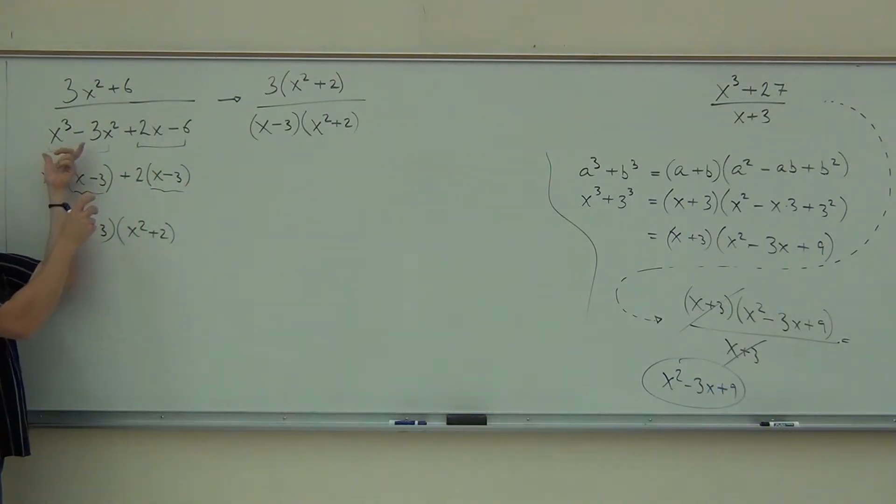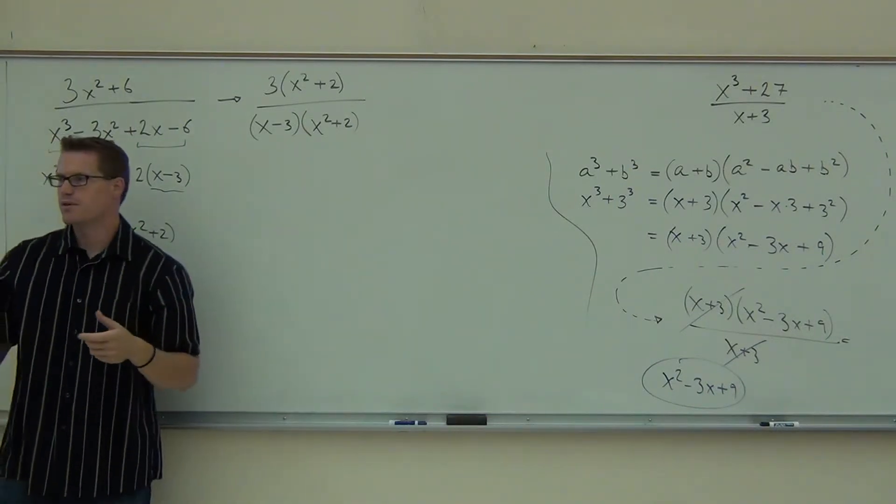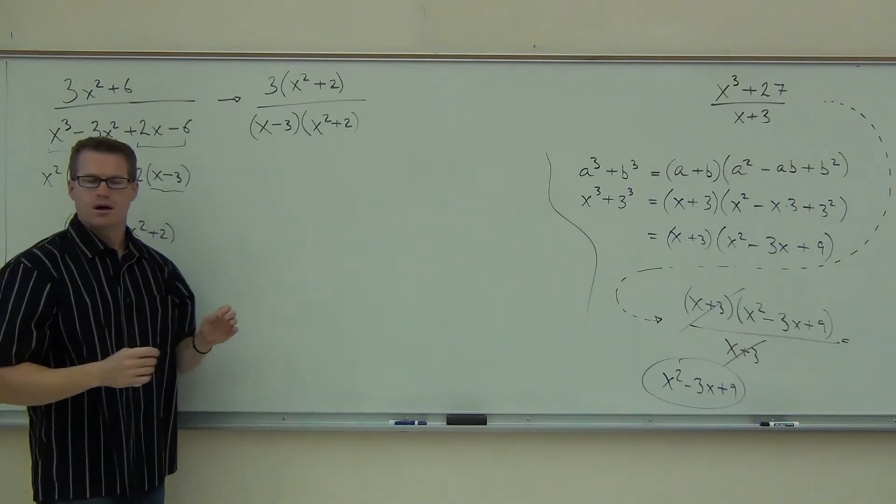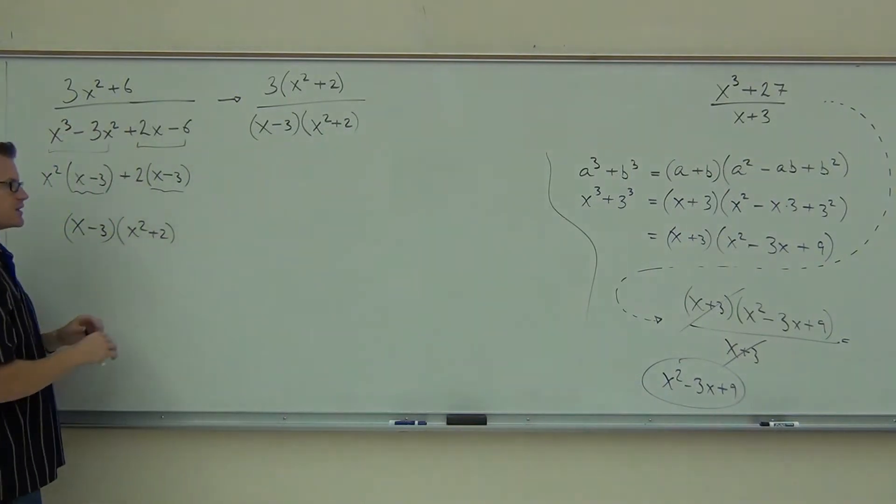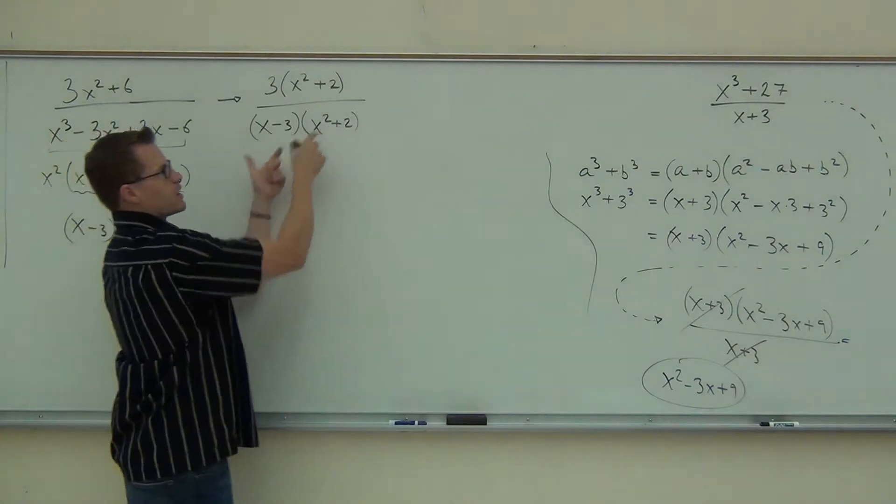So factoring by grouping means the first two, x squared comes out of that. No problem. Second two, only two comes out of that. No problem. When you have exactly the same thing, you factor it out. You write what's remaining in your second parenthesis, just like we do with the extra step on the diamond method. That's really the exact same thing we're doing here. The terms look a little different, but the same idea. And that is our new denominator.